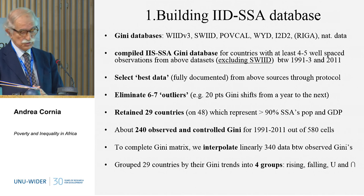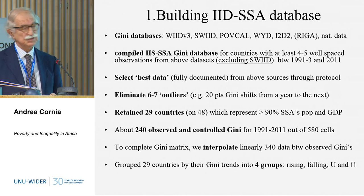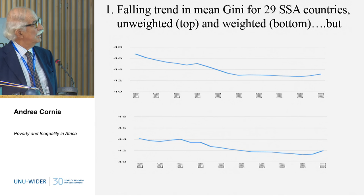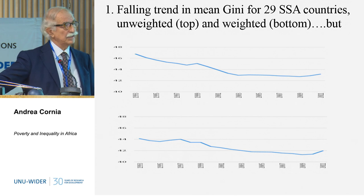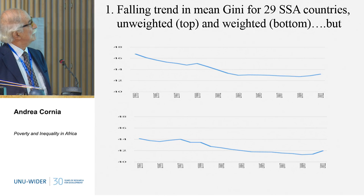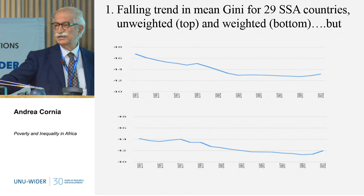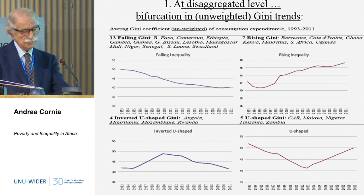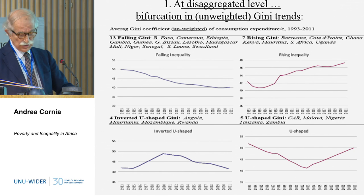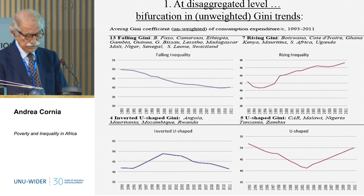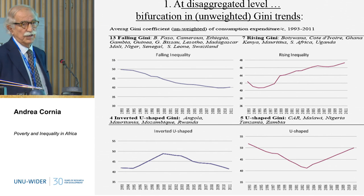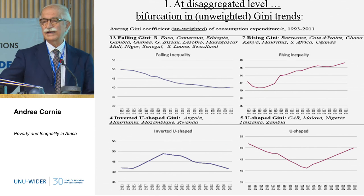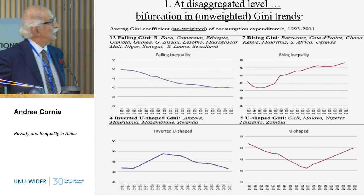The countries, depending on the shape of their own trends, were aggregated into four subgroups. If you measure inequality for these 29 countries in this period, you find a surprising result: inequality falls, both with weighted and unweighted data. But this conceals more than it reveals. If you divide by the four categories depending on their trends, you come up with very different trends — this is why I started talking about bifurcation. We did one study on Latin America, which shows a sort of universal decline in income inequality. Africa is different. Africa is bifurcating.